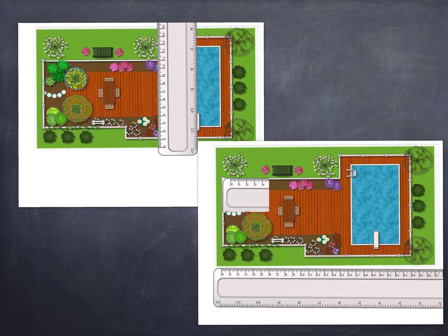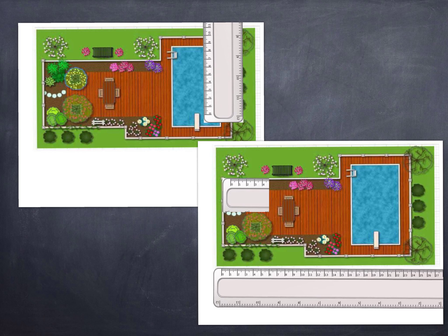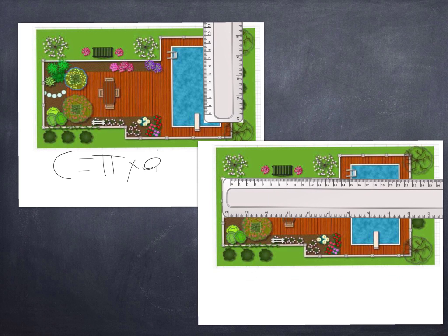We're going to be finding the circumference of this tree, so we have to find the diameter. The formula is C equals pi times diameter. The area formula uses pi times radius squared. The radius gives us 6.28, so 6.28 times pi equals 6.28 times 3.14, and that equals 20.